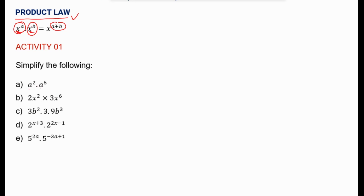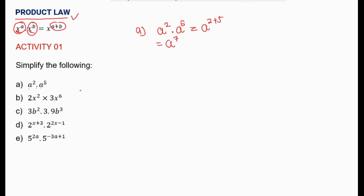We have a to the power 2 times a to the power 5. The bases are the same for these powers, so we can easily add the exponents. So a squared times a to the power 5 is equal to a to the power 2 plus 5, meaning that this is a to the power 7.